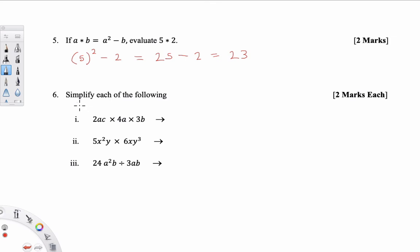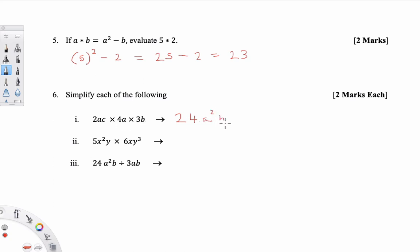Question 6 is all about multiplying. We simplify these expressions by multiplying straight across, and part 3 is the only one where we divide. For part 1, it is 2AC times 4A times 3B. We multiply all the coefficients: 2, 4 and 3 multiply to give 24. Then A multiplied by A is A squared. There is only one B, so we write back B. And there is only one C, so we write back a single C.